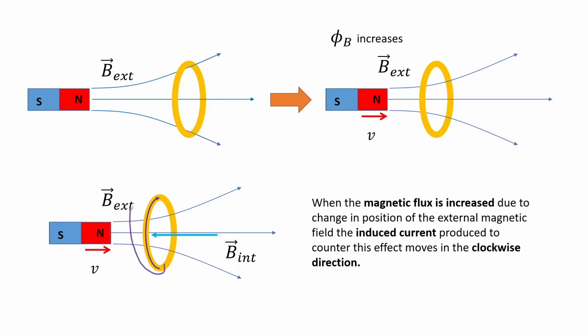By now you may already have an idea of the direction of induced current when the magnetic source is moved in the opposite direction or away from the conducting wire.